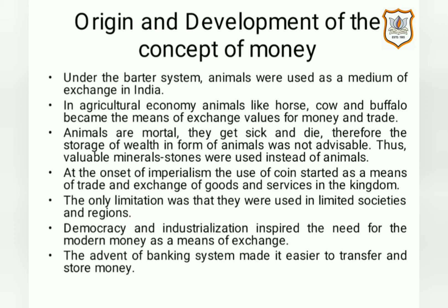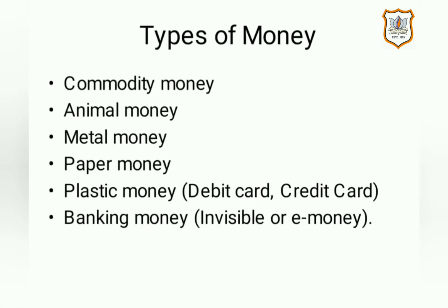With the advent of the banking system, it was very much easier to transfer and store money. Now, after looking into the concept of evolution of money, we may conclude that there are various types of money. The first one is commodity money.